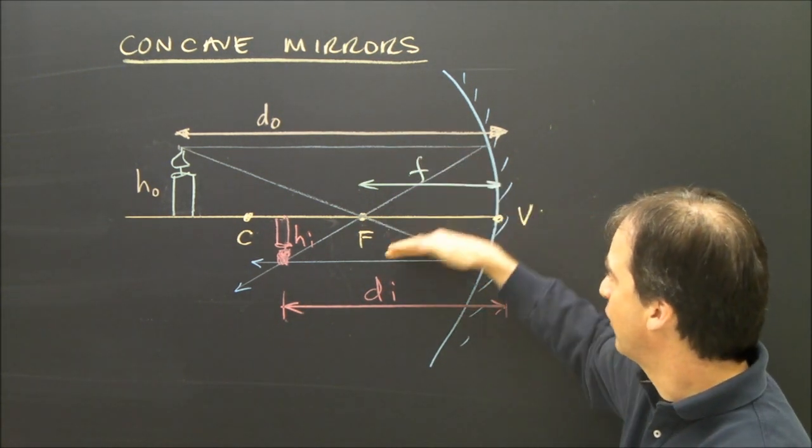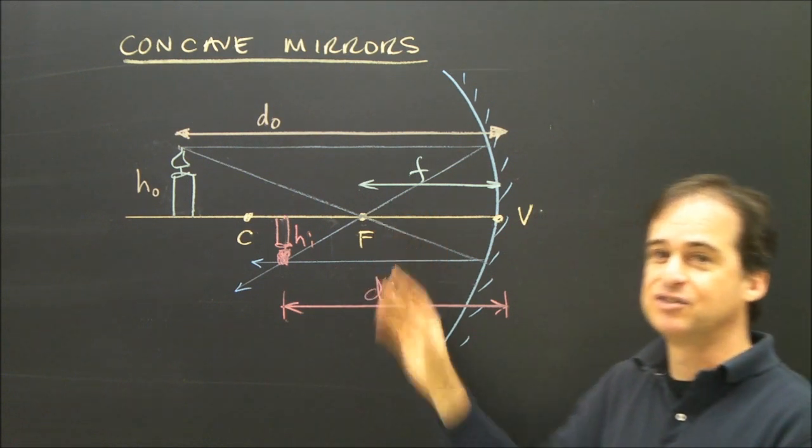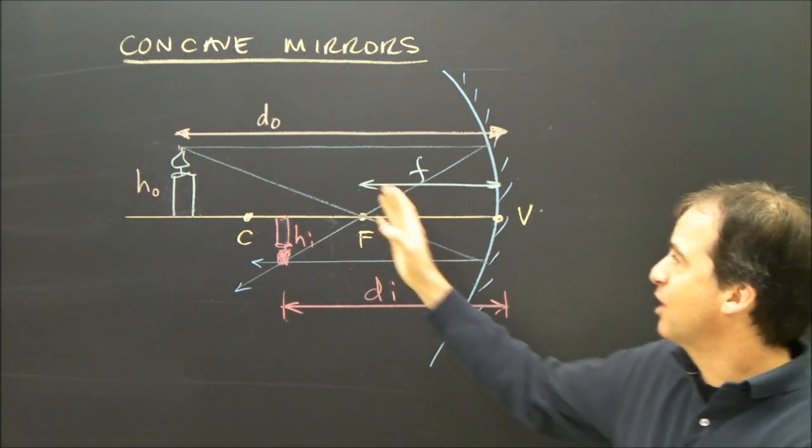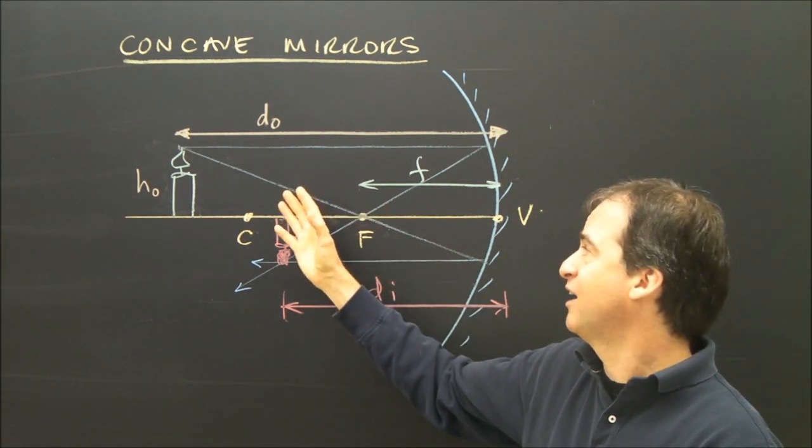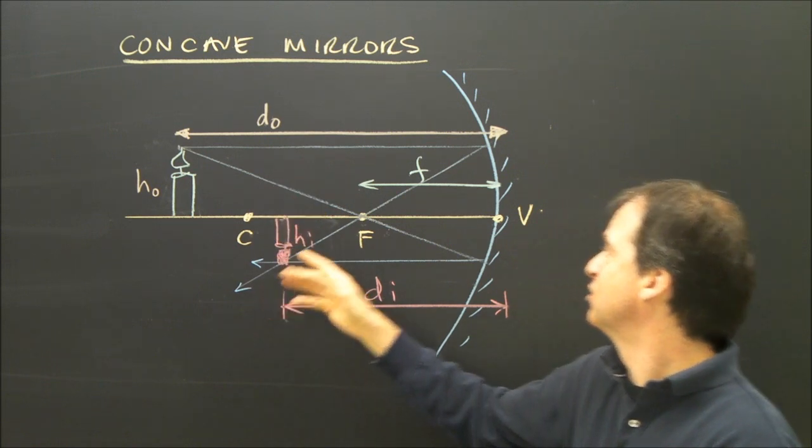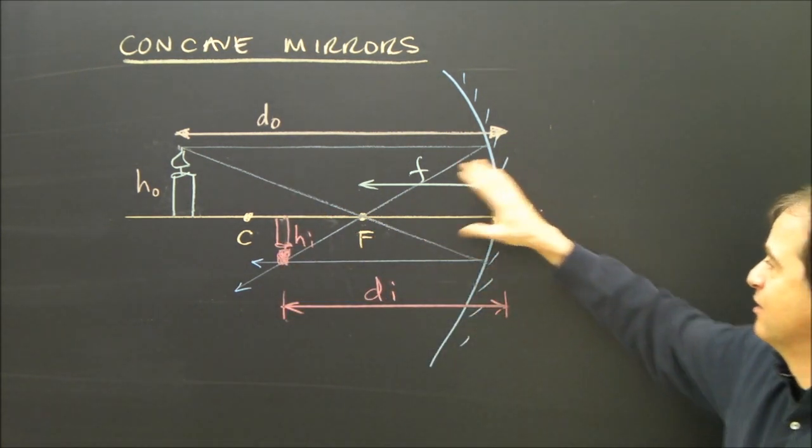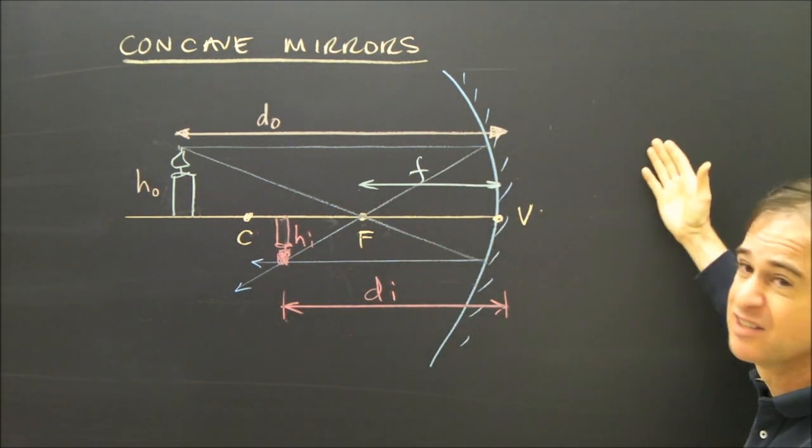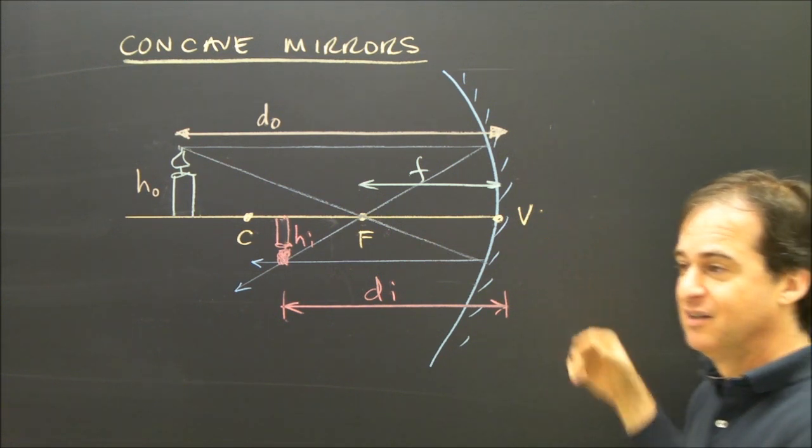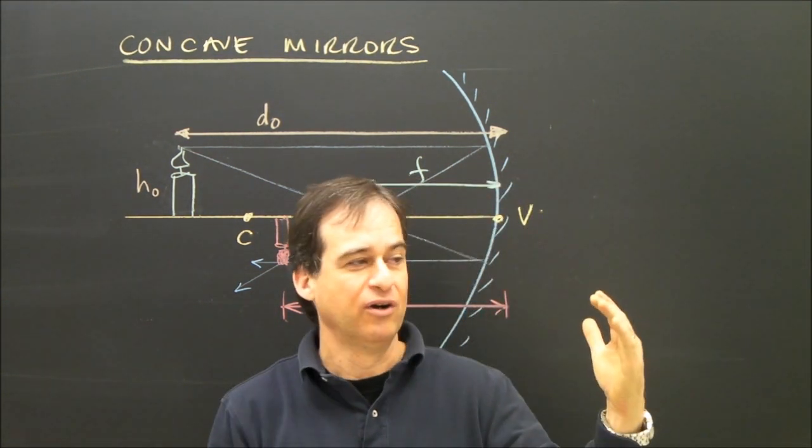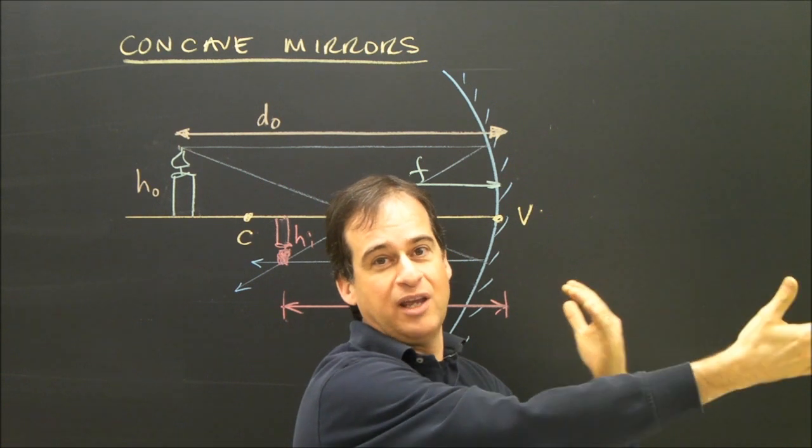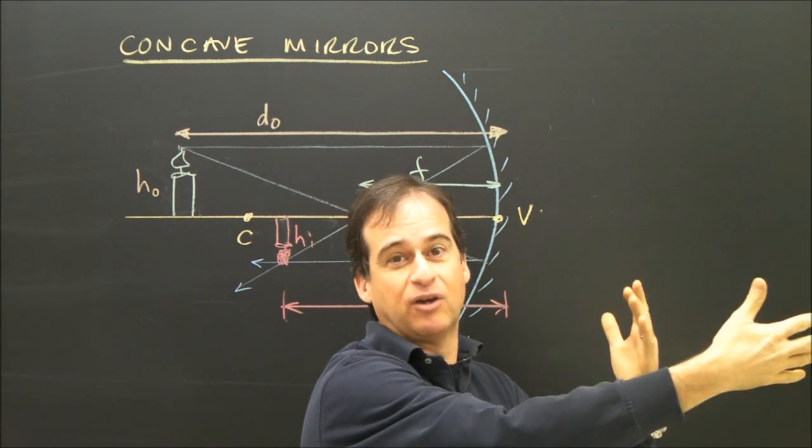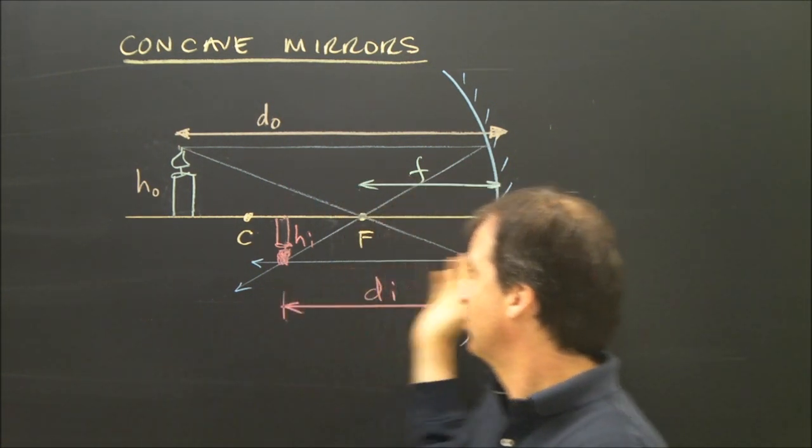So we're going to be using these variables with formulas. This is what they mean. And sometimes the numbers we get will indicate that the distance to the image is on the other side. That means it's a virtual image on this side of the mirror. What does that mean? It means when you look at the mirror, you see in the mirror an image that may be bigger or smaller or whatever, based on your calculations.